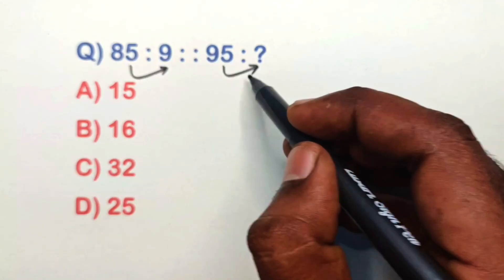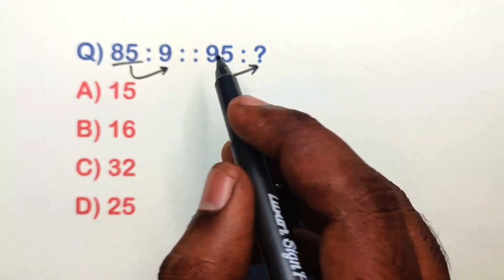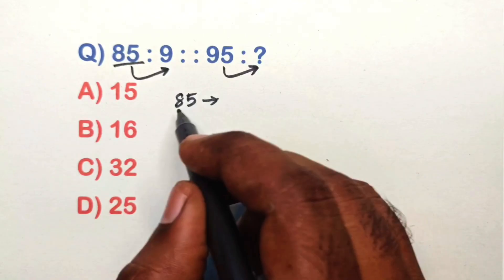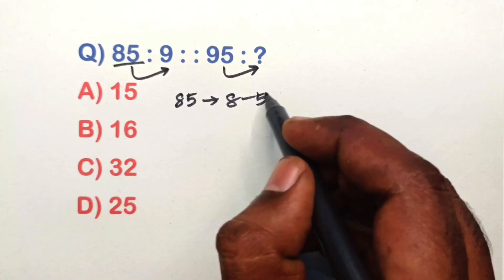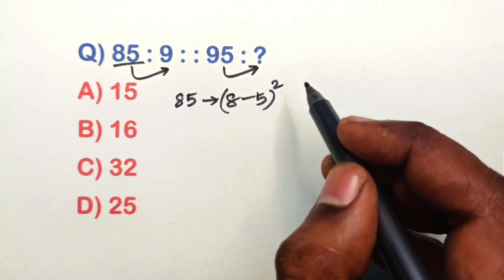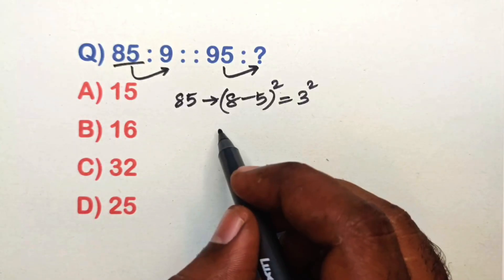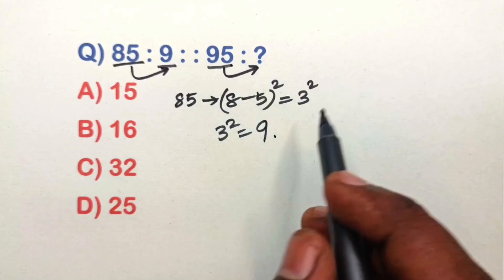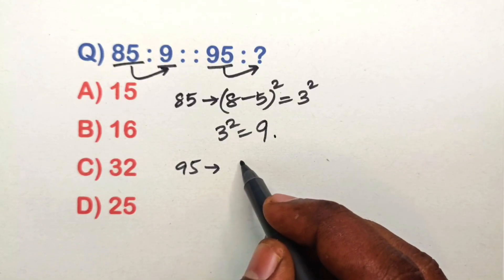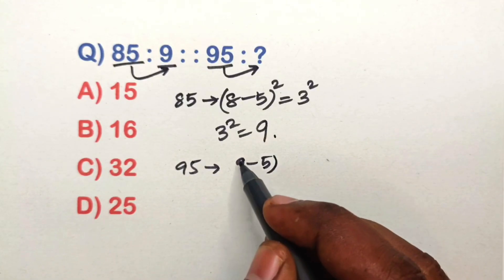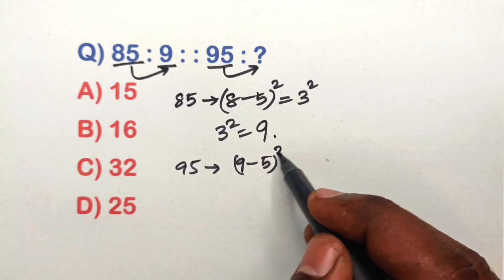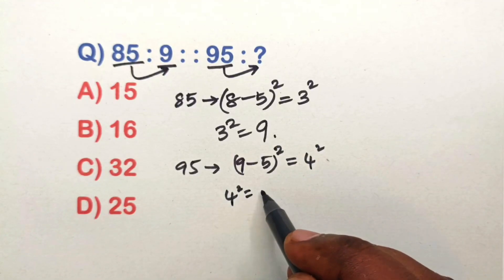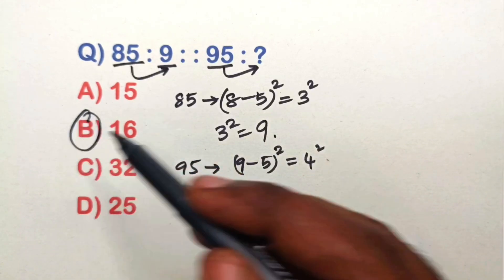Find the relation in this analogy question. Take 85 — subtract the individual digits and square the result: 8 minus 5 is 3, and 3 squared is 9. Same way, take 95: 9 minus 5 is 4, and 4 squared is 16. Option D is the correct answer.